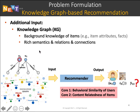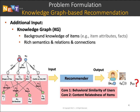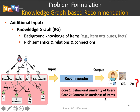Besides interaction data, research studies explore how to use the Knowledge Graph to enhance recommendation performance. Knowledge Graphs organize the background knowledge of items, like item attributes and facts, in the form of graphs. Such graphs contain rich semantics and relations between items and real-world entities. There are two cores in Knowledge Graph-based recommendation models: user-behavior similarities, and content-relatedness of items.